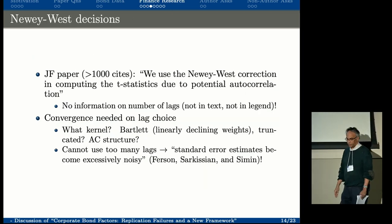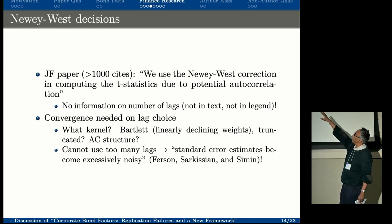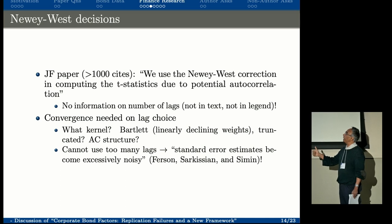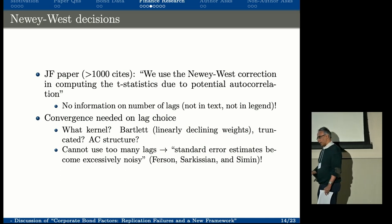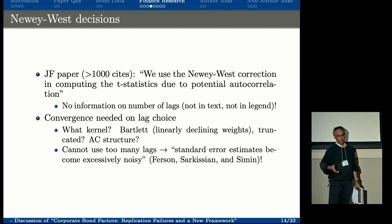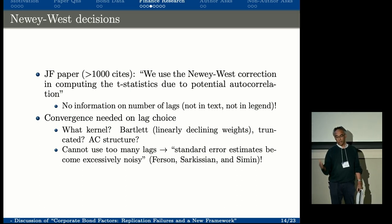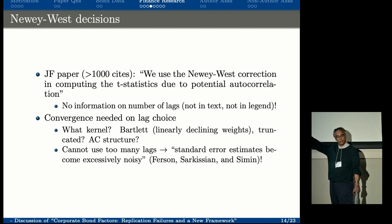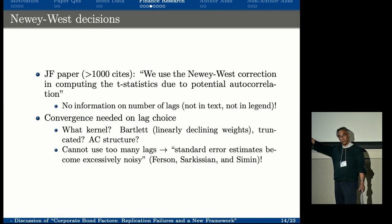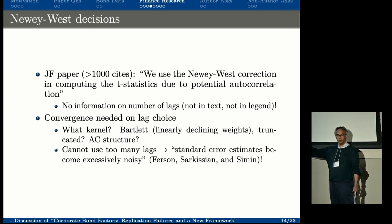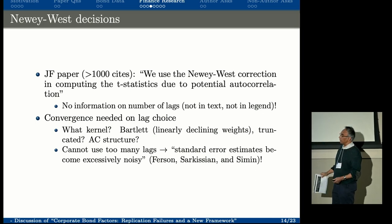Another issue is Newey-West decisions. A very influential paper with more than a thousand citations says it uses the Newey-West correction in computing t-stats, but provides no information on the number of lags—not in text, not in a legend. We need to converge on how to choose the lag; it has specific science associated with it. Is it Bartlett? Is it a cutoff pattern in the autocorrelation? These require different treatments. You need to disclose the number of lags and how you chose them. You can't choose the number of lags required to make significance go away and just say it went away. Standard errors become noisy as you increase lags beyond the optimal point suggested by Newey-West, and referees should be more proactive about asking what exactly was done.